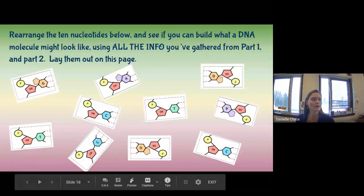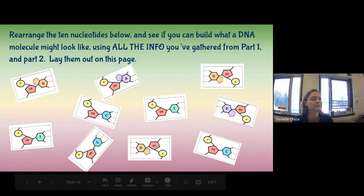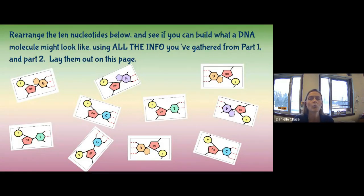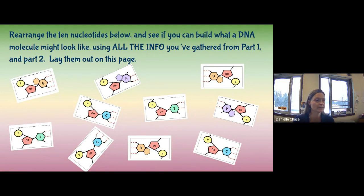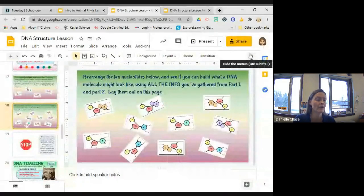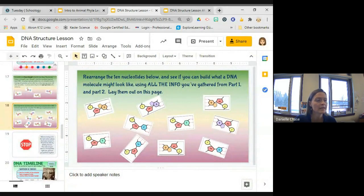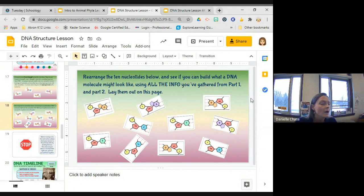On the next slide, you'll rearrange 10 nucleotides to build one DNA molecule — all the pieces have to be touching together. You're going to use the information we've learned so far from parts one and two to lay them out on the page.